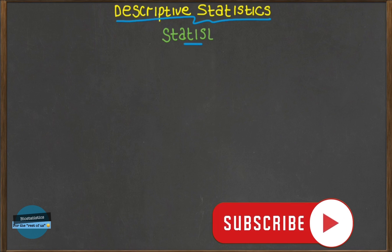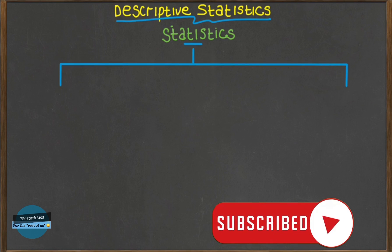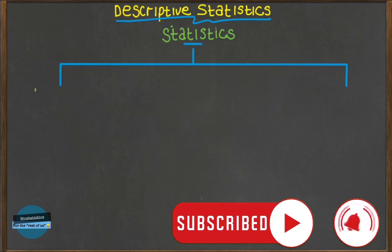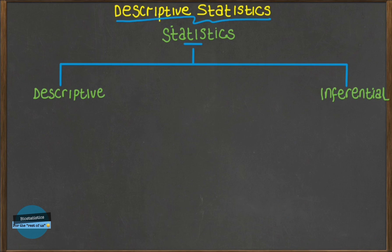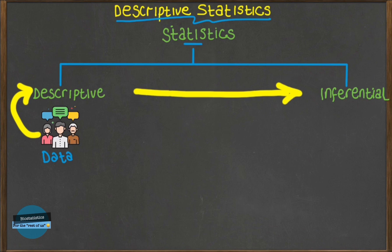Statistics has two main branches: descriptive statistics and inferential statistics. This means that when you have data collected from a population, you describe the data and then you make inference about the population with the description that you have done of that data. So we will be talking about that description of data.